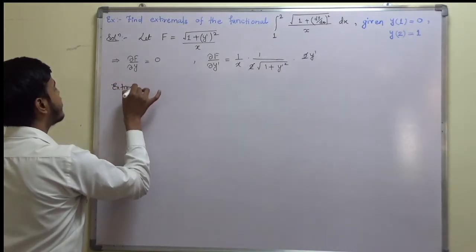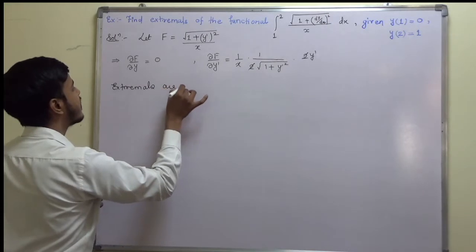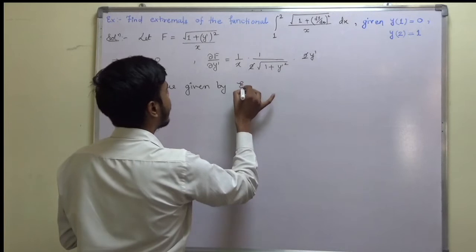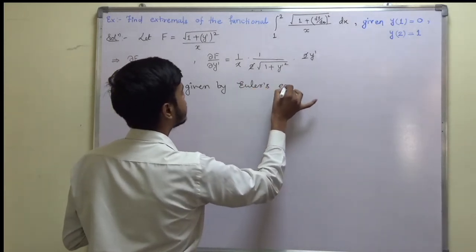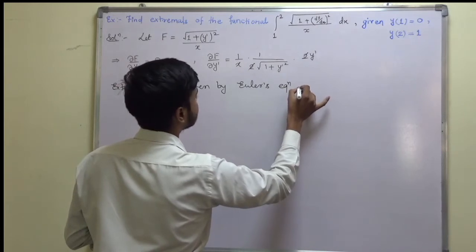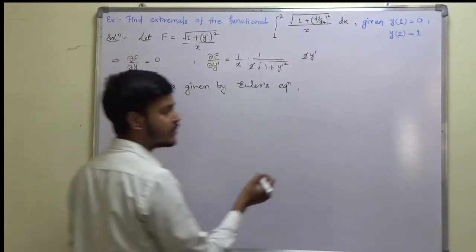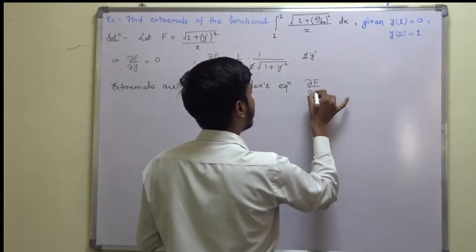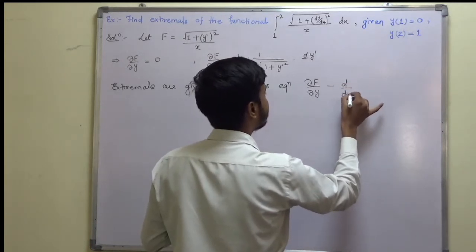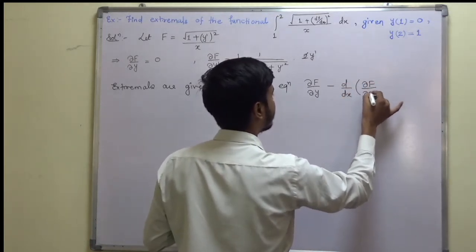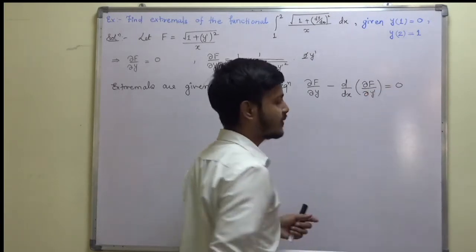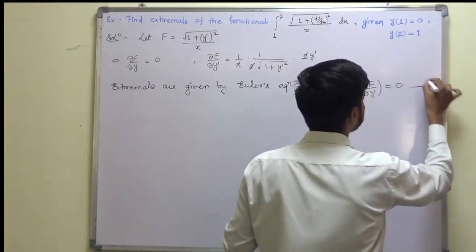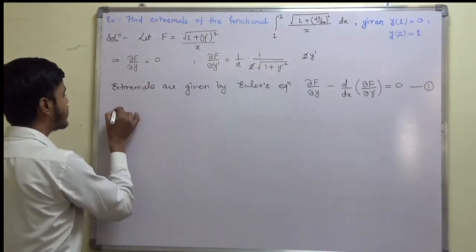The extremals are given by Euler's equation. Since ∂f/∂y = 0, Euler's equation reduces to its first form: d/dx (∂f/∂y′) = 0.